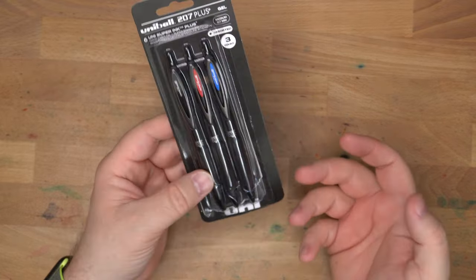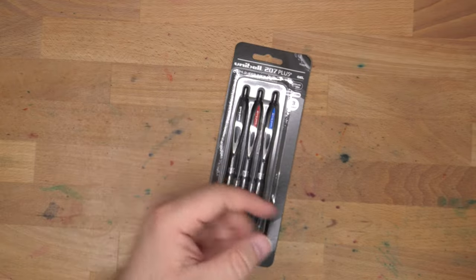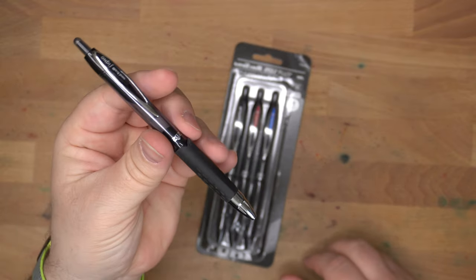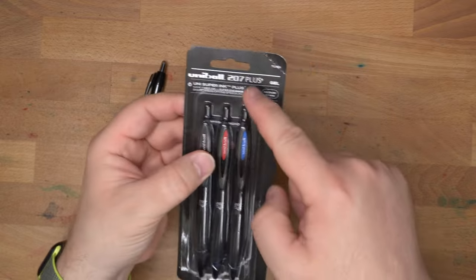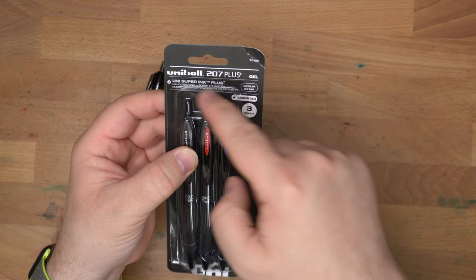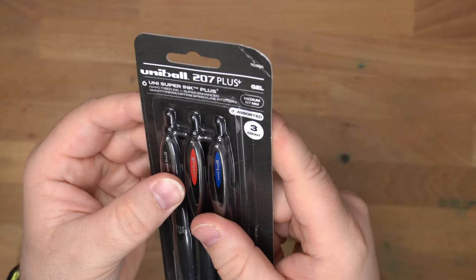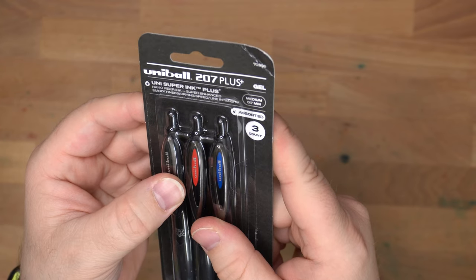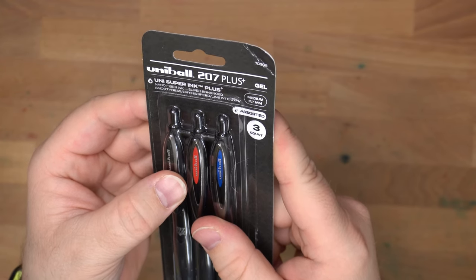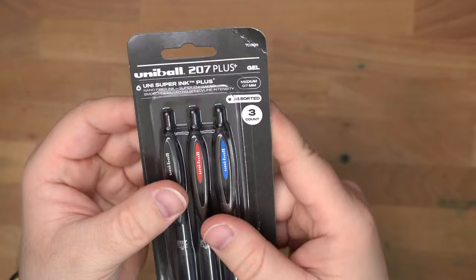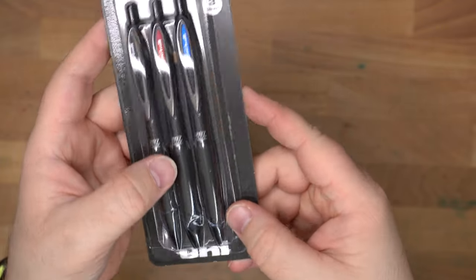Uniball is a pen company that I am a big fan of. I've been using their 207s for a very long time. And these are 207 Plus Plus Gel Uni Super Ink Plus Nano Fiber Ink Super Enhanced Smoothness Drawing Speed Line Intensity Assorted 3 Count Medium. Those are all the informations here.